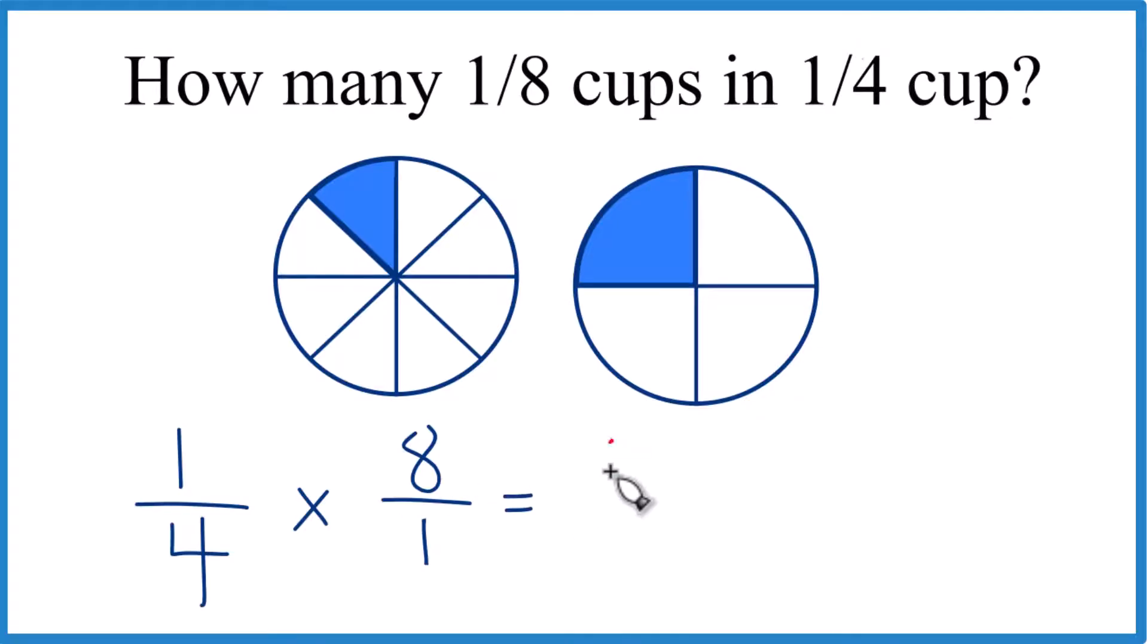One times eight, that equals eight. Four times one, that equals four. And eight divided by four is two.